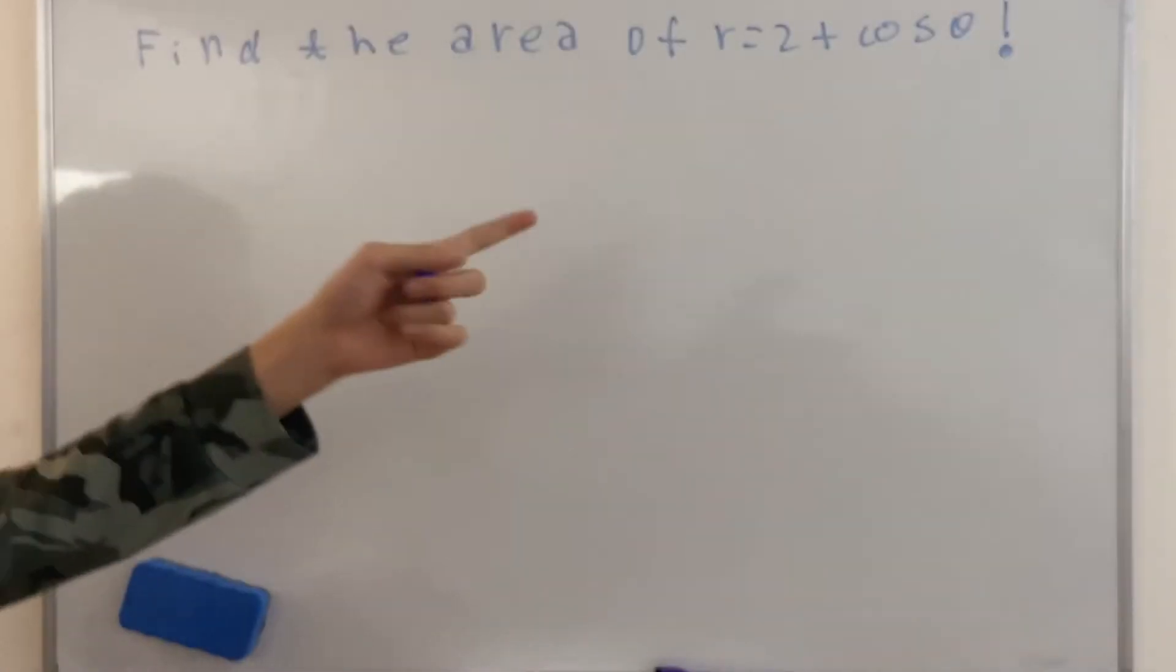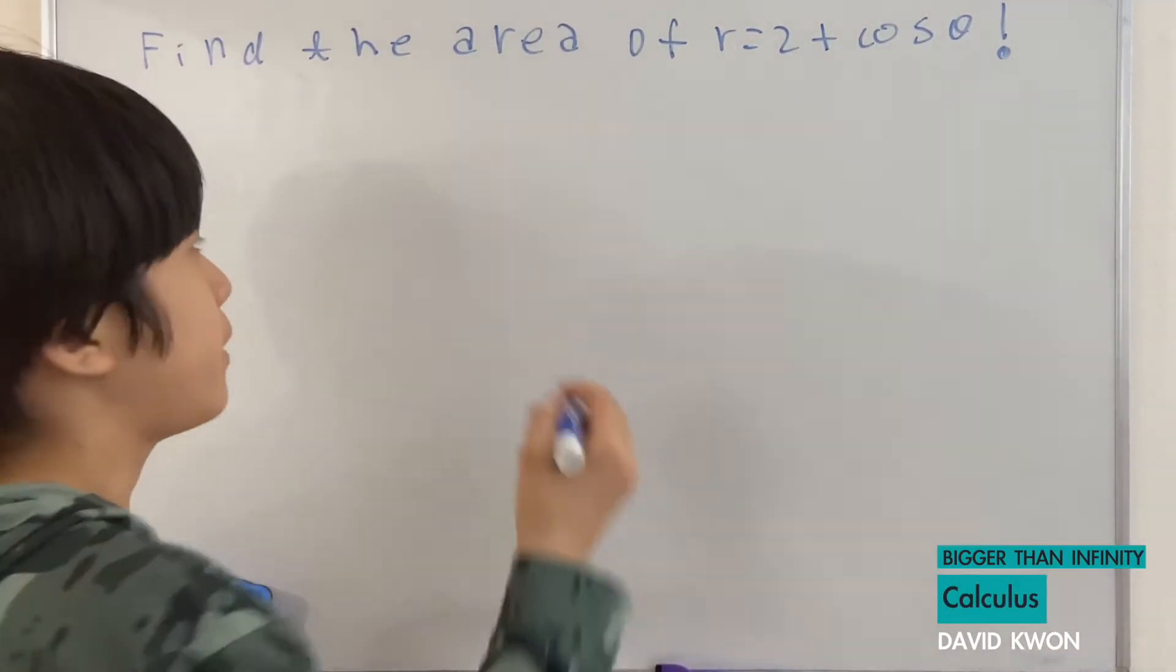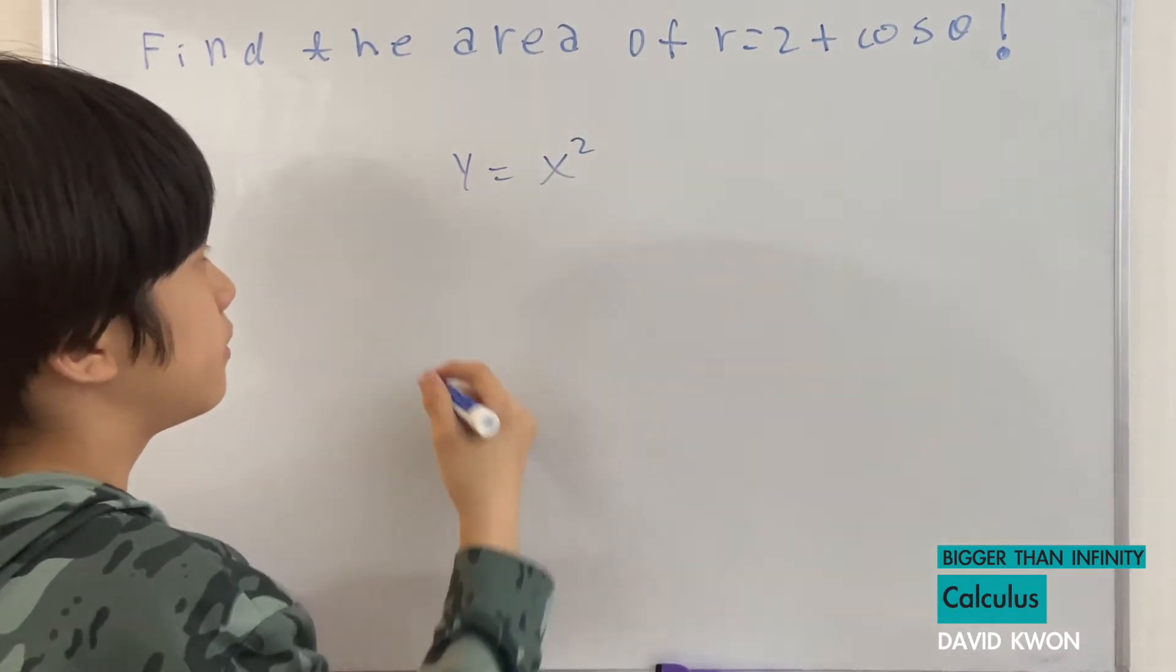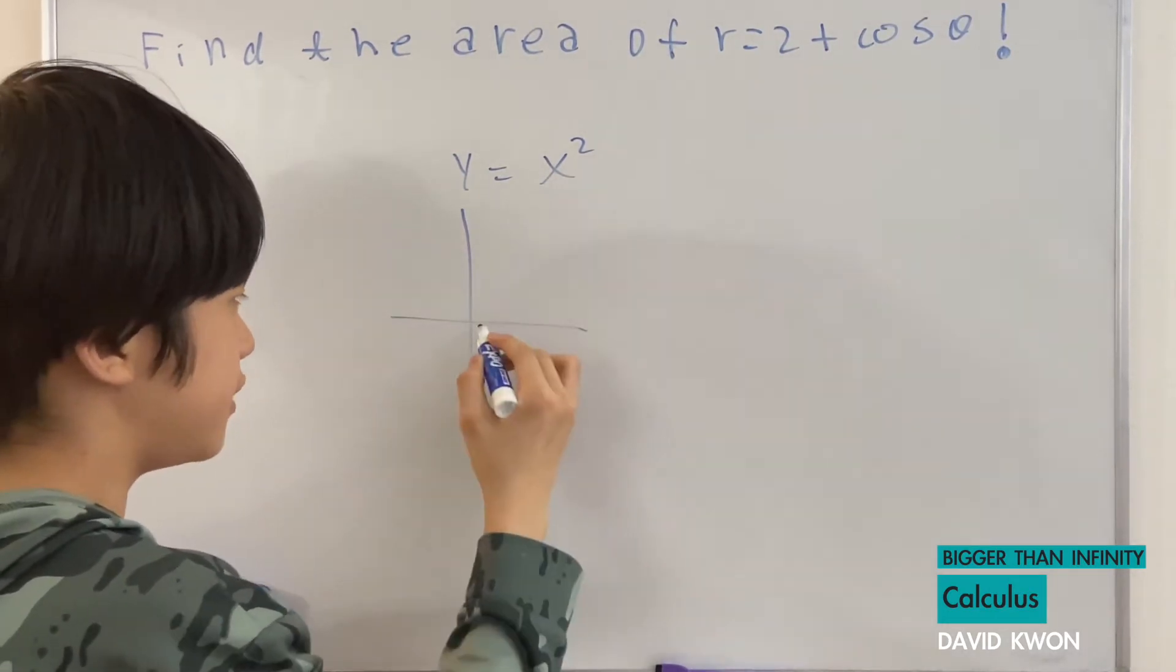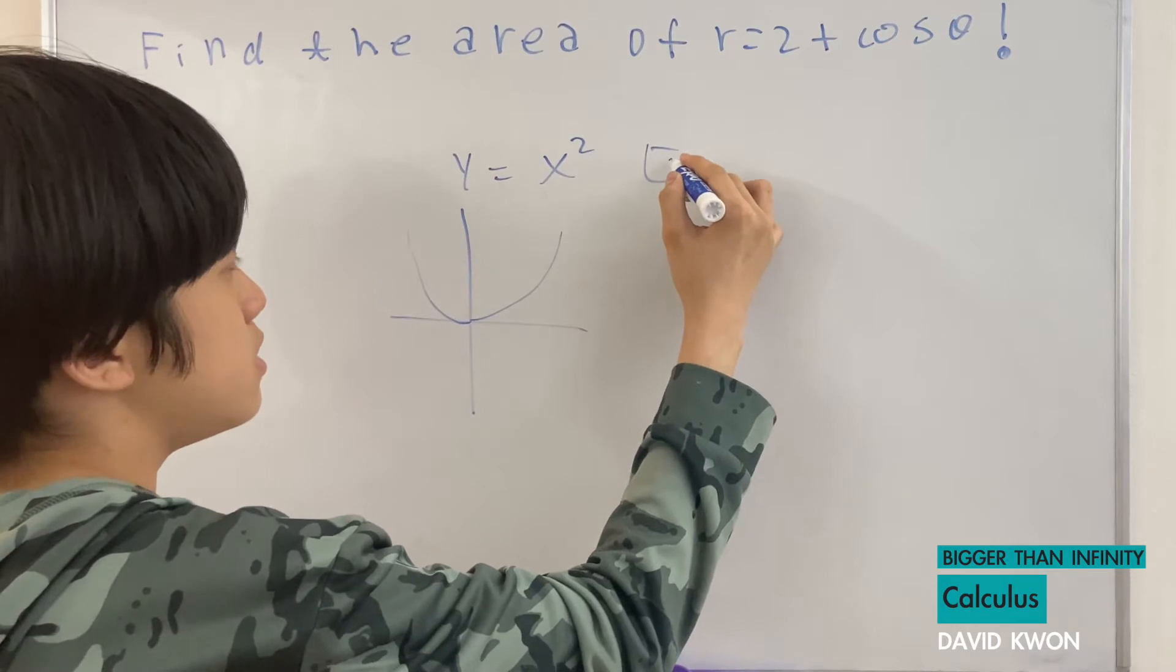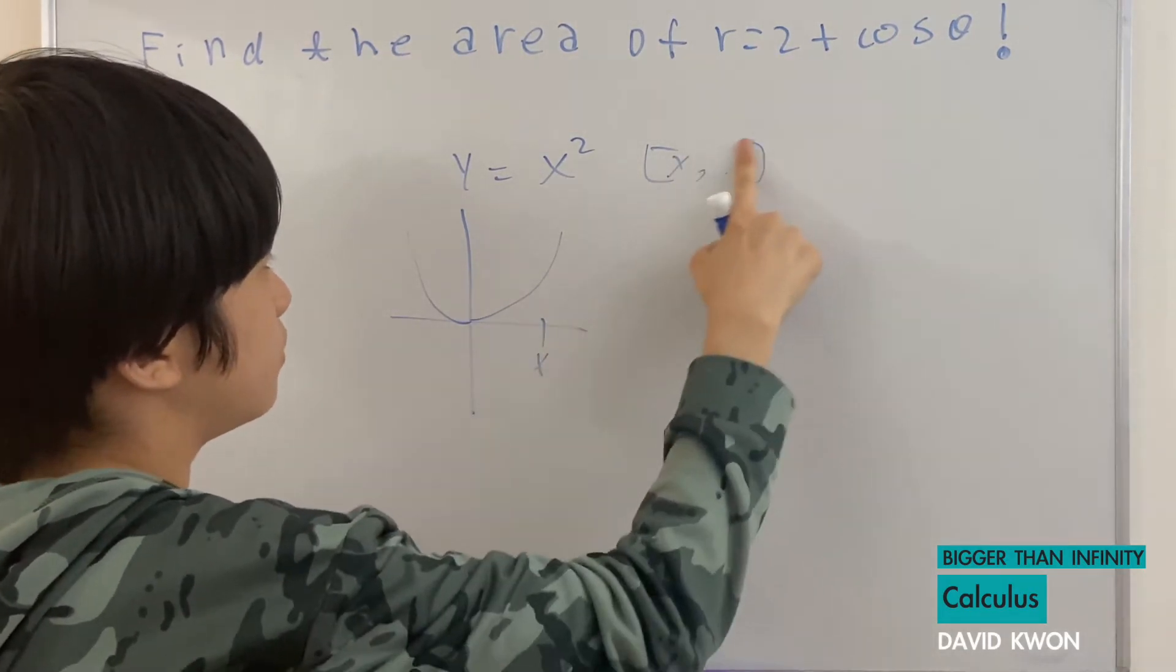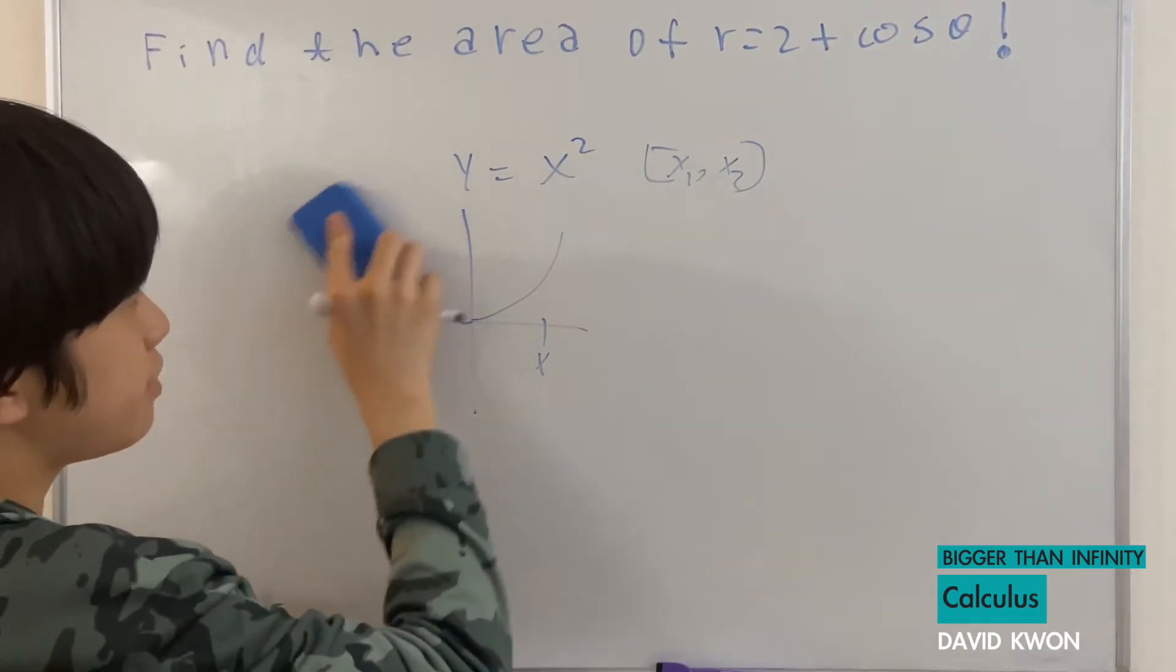To find the area of this, usually when we have, for instance, y equals x squared, and it tells us to find the area, we need the interval. It doesn't matter, x, y coordinate, wait no, x1 and x2.